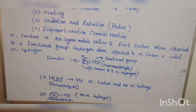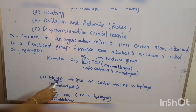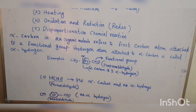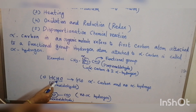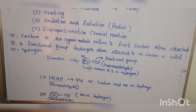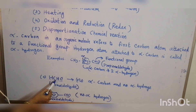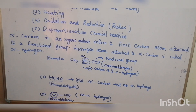Now consider formaldehyde: CHO. CHO is the functional group, and this carbon is connected to only one hydrogen. The functional group CHO is not connected to an alpha-carbon — there is no alpha-carbon. As there is no alpha-carbon, there is no alpha-hydrogen.